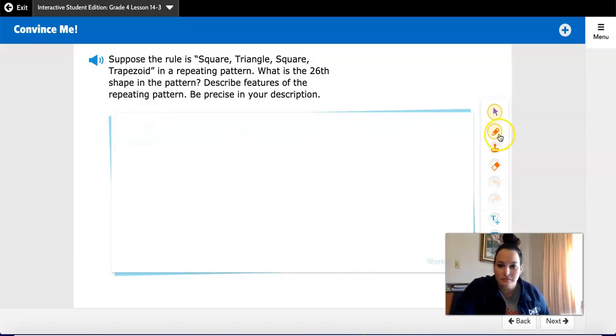So square, triangle, square, trapezoid. Square, triangle, square, trapezoid.